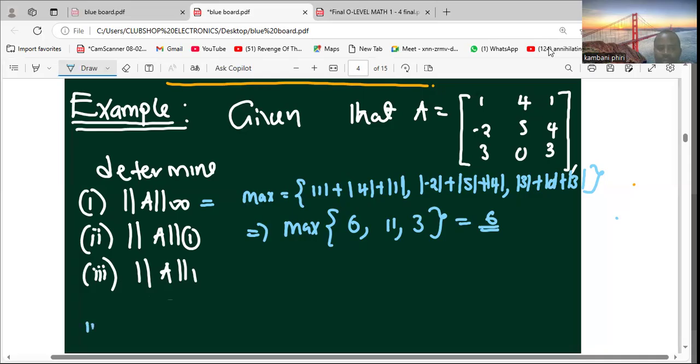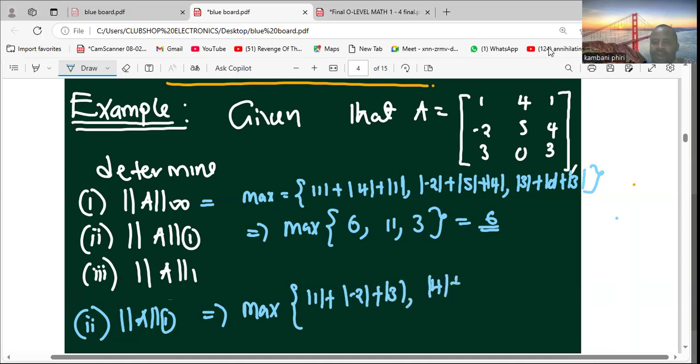Then number two, we get the one norm of A. The one norm of A is the opposite of what we were doing. Here we deal with the columns, the absolute column sums. We need to get the maximum of the absolute value of 1 plus the absolute value of 2 plus the absolute value of 3, comma, the absolute value of 4 plus the absolute value of 5 plus the absolute value of 0, comma, the absolute value of 1 plus the absolute value of 4 plus the absolute value of 3.